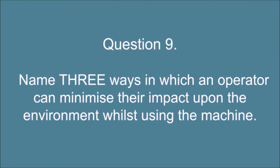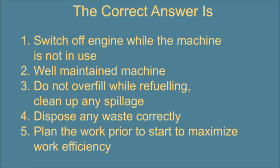Question 9. Name three ways in which an operator can minimize their impact upon the environment whilst using the machine. The correct answer is: 1. Switch off engine while the machine is not in use, 2. Well maintained machine, 3. Do not overfill while refueling, clean up any spillage, 4. Dispose any waste correctly, 5. Plan the work prior to start to maximize work efficiency.